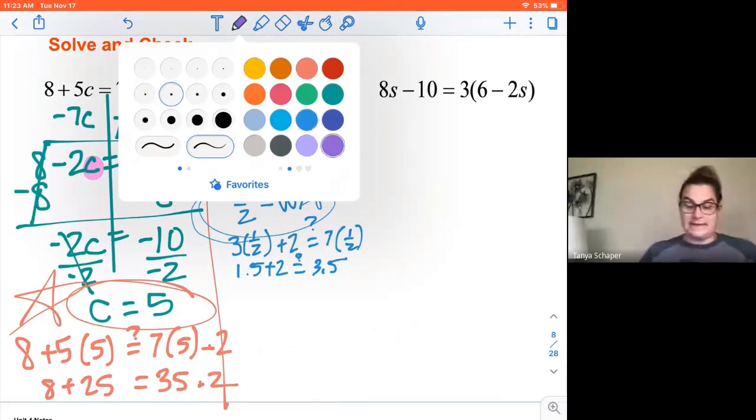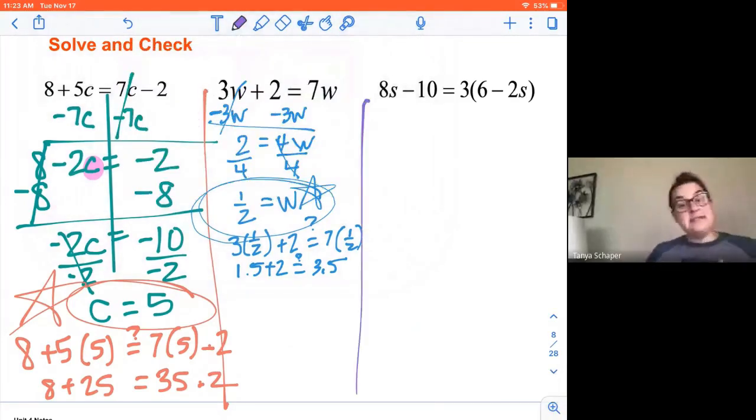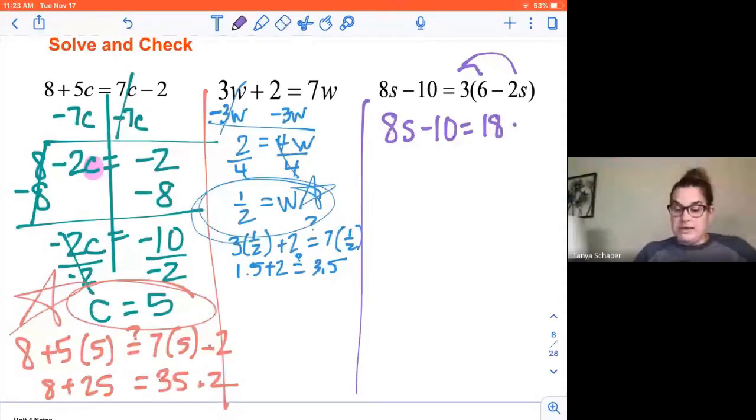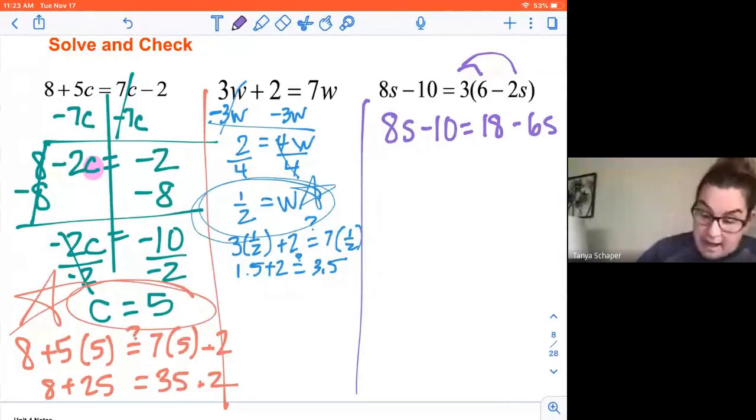So I'm going to take this and shrink this down a little bit. Now I have a little bit more room to work on the right. One more and then it's practice time. Here we go. This one is a little different than the first two because I need to simplify that right side. I need to get the parentheses gone. I need to distribute. So 8s minus 10, 3 times 6 is 18 minus 3 times 2s is 6s. All right. So that's that simplify part. If you want to add up, go ahead and do that. It's a personal preference, not required on my part.